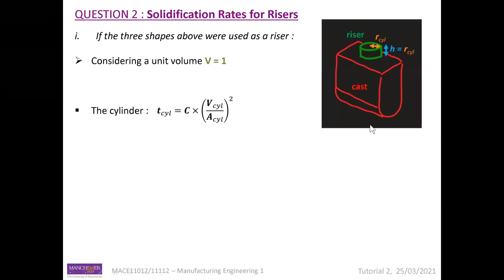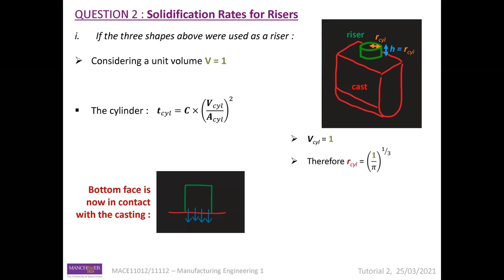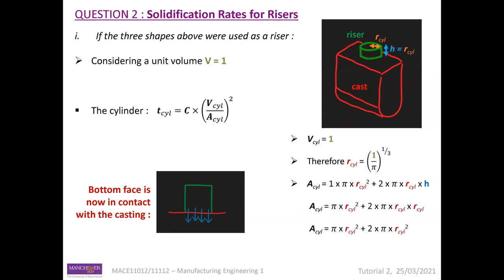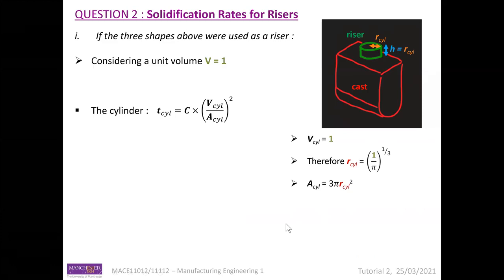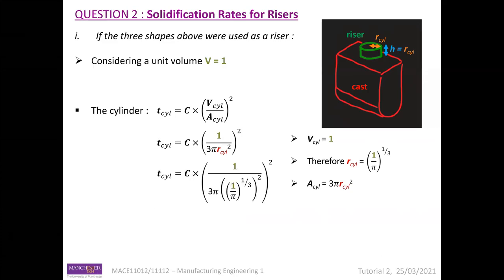For the cylinder riser, the same assumptions apply: h = r and the bottom face is in contact with the casting, so it is excluded from the surface area. Instead of 2πr², the effective area becomes 1 × πr² for the top face plus the lateral surface. Working through the equations with the unit volume substitution, the solidification time for the cylinder riser equals 0.052 × C.